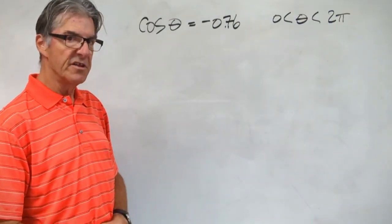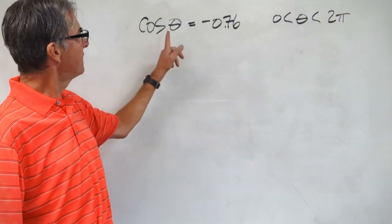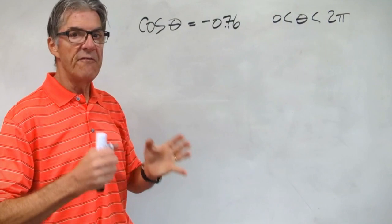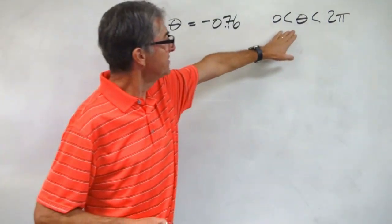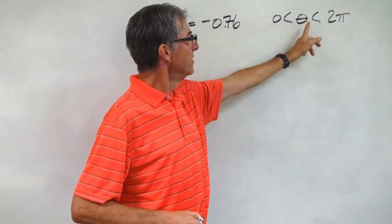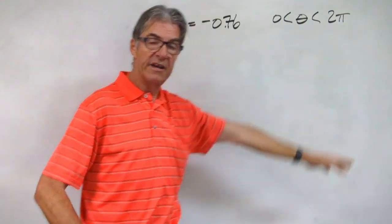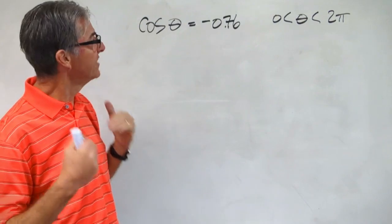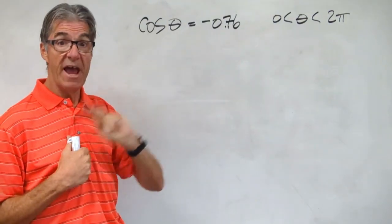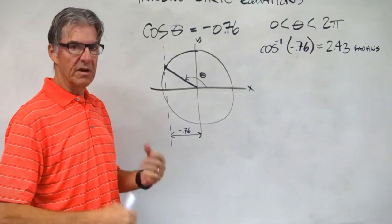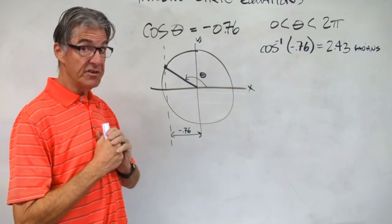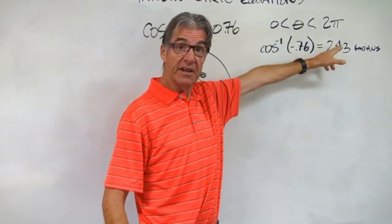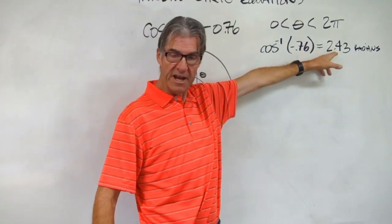Here's another one with cosine. If cosine theta equals negative 0.76, I want you to find theta inside of 0 to 2 pi. We're going to do this one in radians, so go ahead and set your calculator to radians. There are two angles that you can find. I did the inverse cosine of minus 0.76 and what I get is 2.43 radians.